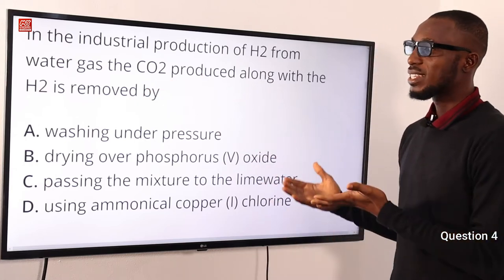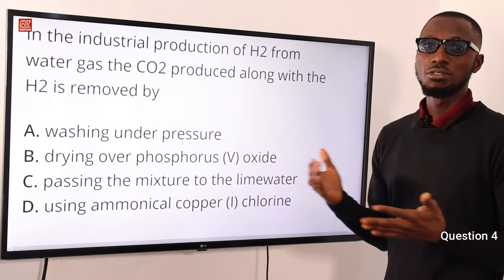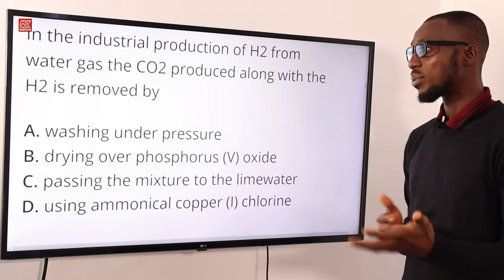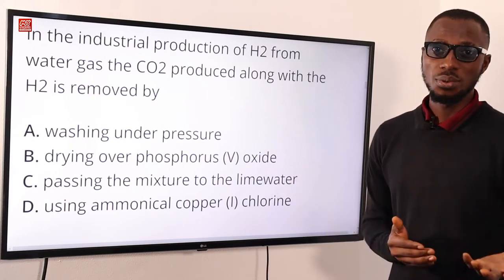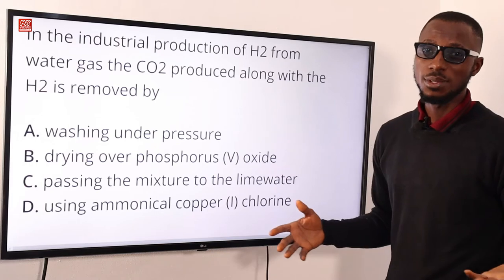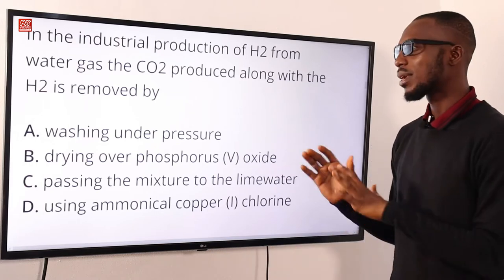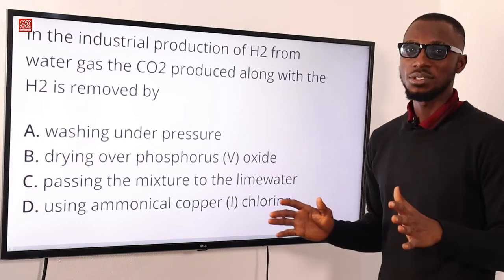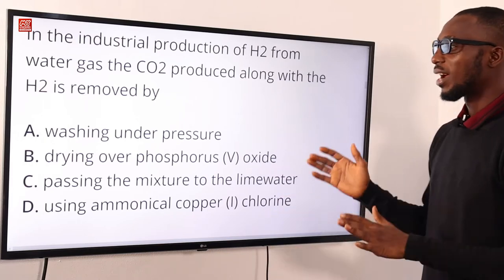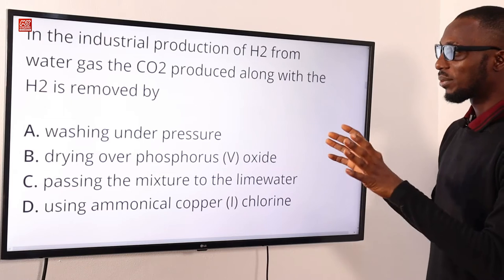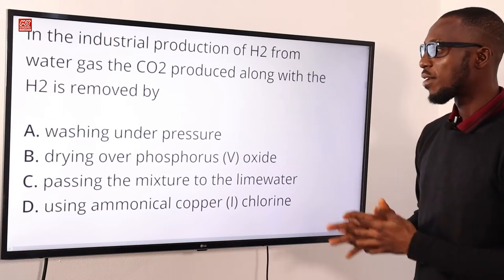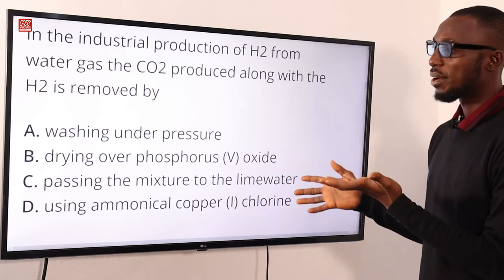This carbon dioxide produced is now being removed by passing the mixture through water — dissolving it under a pressure of about 30 atmospheres. Or you can use caustic soda solution. Whichever one works. From the options provided, we have washing under pressure.